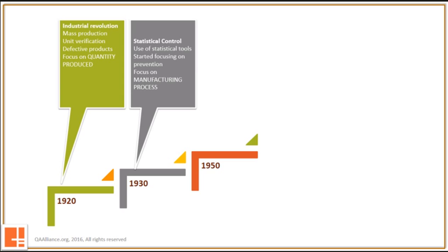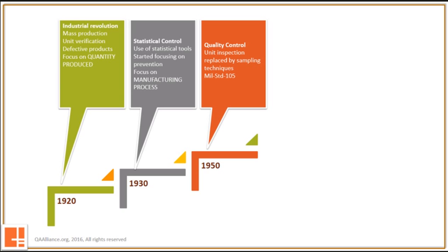The decade of the 40s came with an unfortunate set of events — World War II. During that period, quality became a critical safety factor for the US military. They virtually inspected every single unit produced, but this was quite a challenging task. So they started replacing unit inspection with sampling methods and published sampling tables in their Military Standard 105. These tables were incorporated into military contracts so that suppliers clearly understood the expectations.